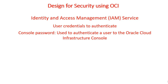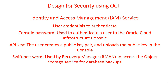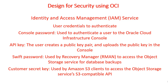There are several credential types. A console password is used to authenticate a user to the Oracle Cloud Infrastructure console. An API key uses a public-private key pair — the user uploads the public key in the console and the connecting endpoint holds the private key. A Swift password is used by Recovery Manager (RMAN) to access the object storage service for database backups, and it is a complex password generated by Oracle infrastructure. A customer secret key is used by Amazon S3 clients to access the object storage service via the S3 compatibility API.